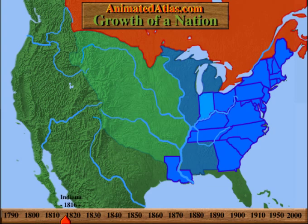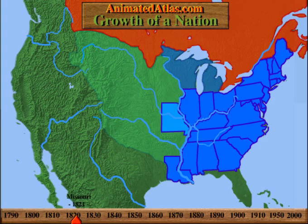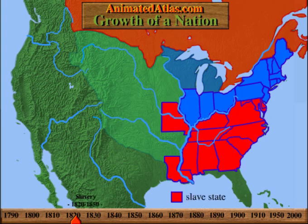The states of Indiana, Mississippi, Illinois, Alabama, Maine, and Missouri were quickly admitted to the Union. Three were slave states, three were free. This maintained an equal number of slave and free states in the Senate, and the South's ability to stall legislation and maintain slavery in the Union.